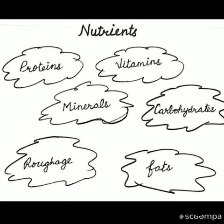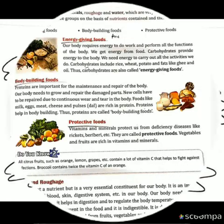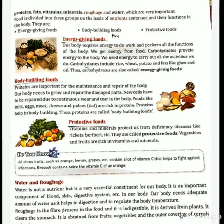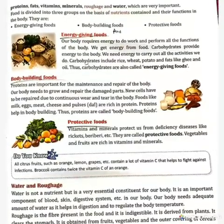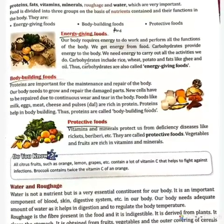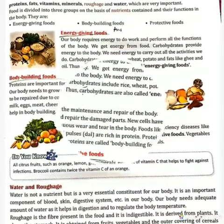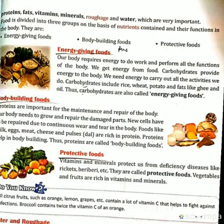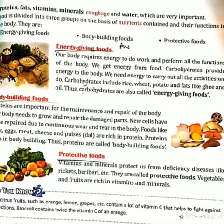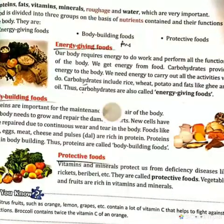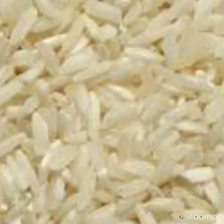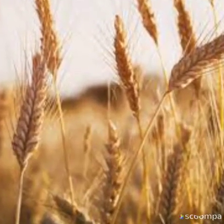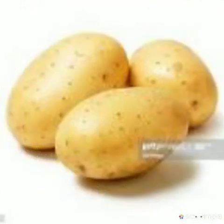On this basis our food is divided into 3 groups. The first one is energy-giving food. Our body needs energy to perform all the body functions. Food rich in carbohydrates gives us energy. Can you tell me which food items are rich in carbohydrates? Yes — that is rice, wheat, potato, etc. They give us carbohydrates, so they are called energy-giving food.